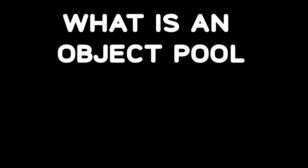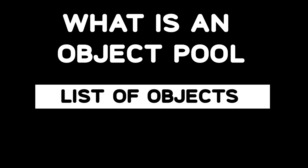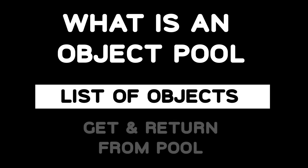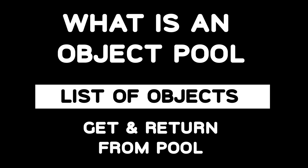But what is an object pool? Well, it's what it sounds like — it's a pool of objects. A pool meaning a list, so it's a list of objects, and the pool basically keeps track of your objects. So once your game starts, you instantiate all of your objects at the beginning, you store them in this pool, and then when you need them, you just pick them out of the pool and use them, and then put them back when you're done.